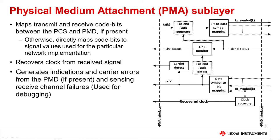If the PHY does not support auto-negotiation, it may instead include an optional far-end fault detect capability. If the PHY detects a physical error condition in the received channel, it will generate a fault indication and insert this in the TX channel stream. If it receives a far-end fault indication in the RX channel, which is a special symbol pattern, it will begin transmitting an idle symbol pattern to assist with re-establishing normal communications. Note that far-end fault detect is not supported if the PHY is capable of auto-negotiation. Some optional functionality that the PMA performs also includes generating indications and carrier errors from the PMD if present, and sensing received channel failures then transmitting or detecting far-end fault indications. This is useful for any debugging on the PHY.